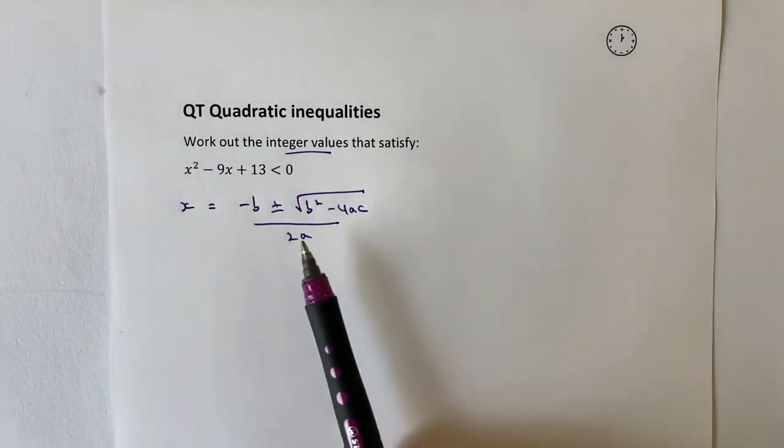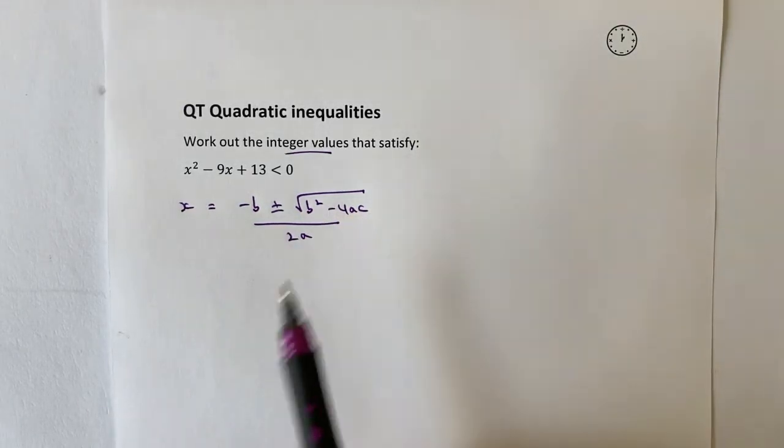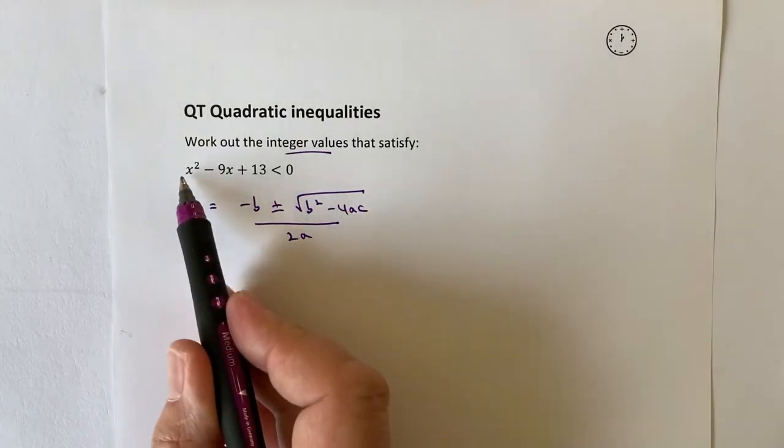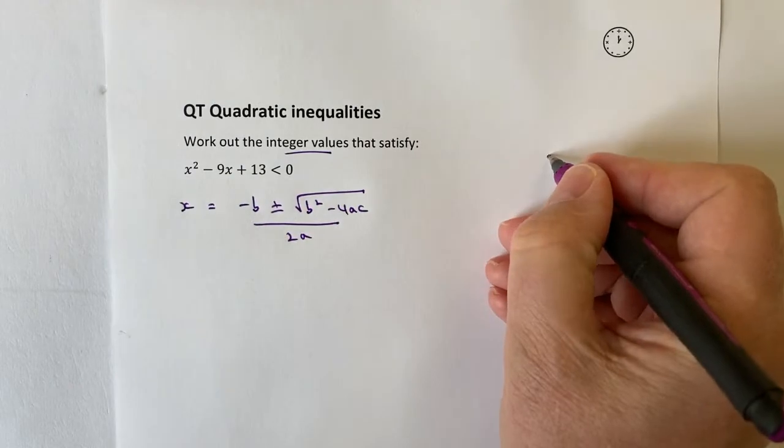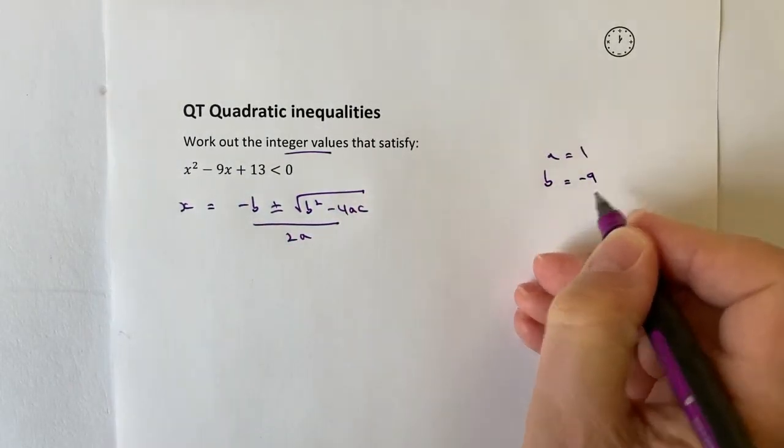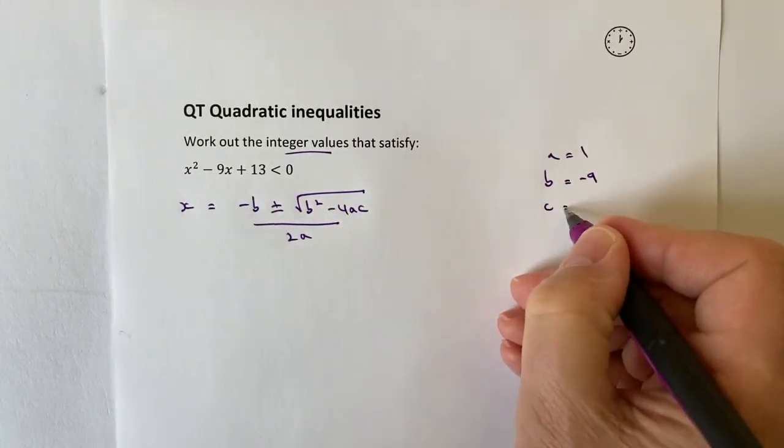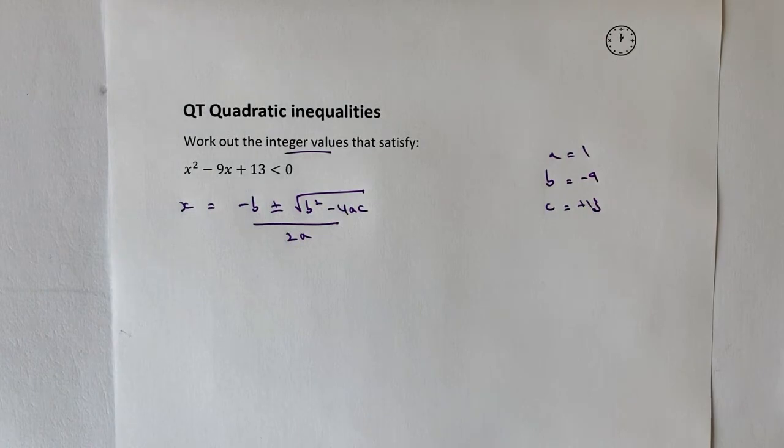I've got three values that I need to look at: value of a, value of b, value of c. Well, a is going to be 1 because it's 1x squared, b is going to be minus 9, and c is going to be positive 13. Now it's just a case of putting this information into the formula and solving it to get the values of x.